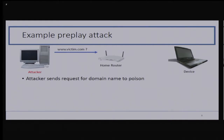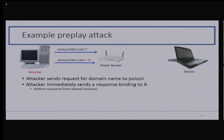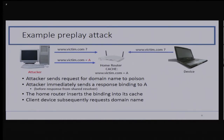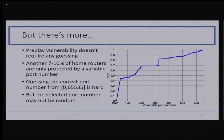Here's an example of how the pre-play attack might be used. The attacker sends a request for a name to be poisoned to the home router, and immediately follows up with a response. Since the attacker sends these two back-to-back, the response will arrive before anything from an upstream resolver possibly could, with very high probability. The home router will cache this response because it doesn't perform validation. Sometime later, a device within the home network will send a request for the same domain name and receive the poison.